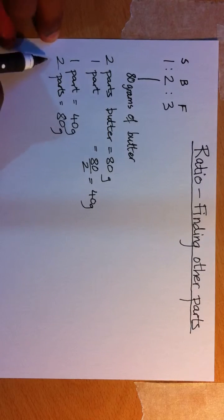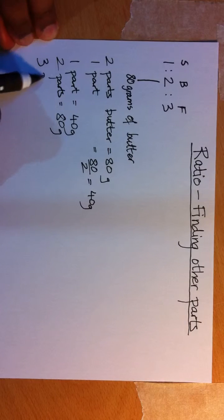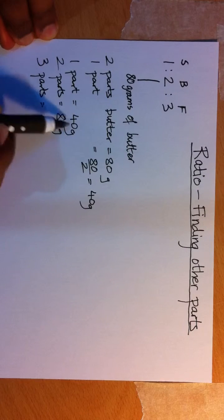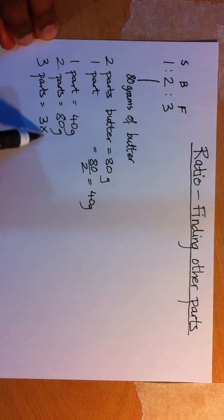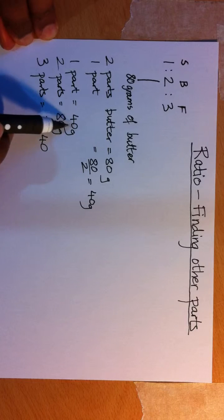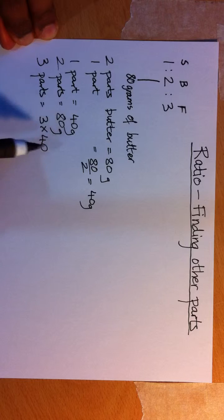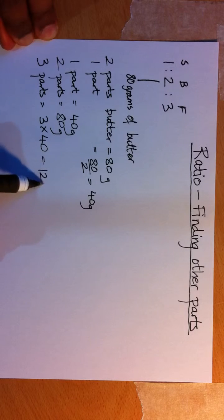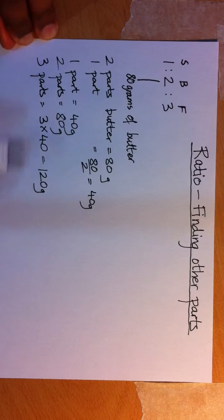And flour, which is three parts, will simply be 3 times 40. Because one part is 40, that means three parts must be 3 times that, which is 120 grams.